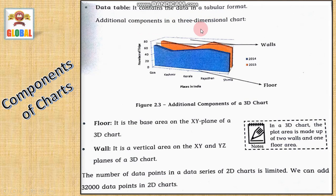Additional components of three-dimensional chart. These above components are of two-dimensional chart. Now, in case of three-dimensional, we have walls. These are called as walls and this is called as floor. Floor is the base area on the x-y plane of a 3D chart. Horizontal base is called as floor. While wall, it is a vertical area, x-y and y-z planes of 3D chart. The number of data points in data series of 2D chart is limited. We can add 32,000 data points in a 2D chart. Here is a note. In 3D chart, the plot area is made up of two walls and one floor area. Here, this is one floor area and two walls like this is one wall and this slipping is another wall. It has two walls and one floor area.